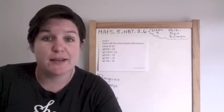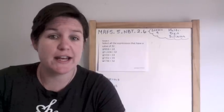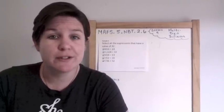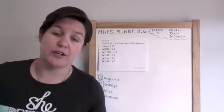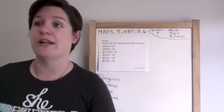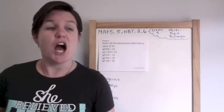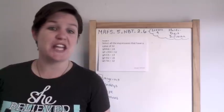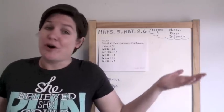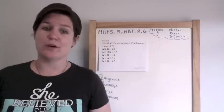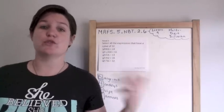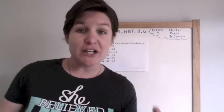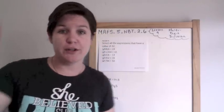Alright guys, this is example three. It says select all the expressions that have a value of 32. So that means we need to divide all of these expressions out and see if our quotient equals 32. I know I just lost some of you - some of you just went, what? I'm not doing that. Okay, that's what hard work is, guys. That's how you get success. But I don't want to spend five minutes with you just watching me solve it out.